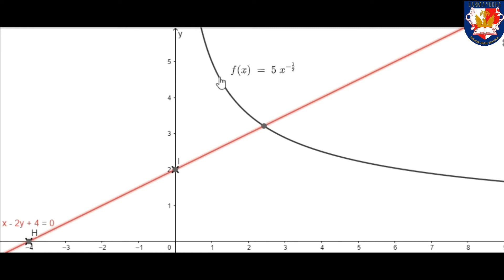From the curve y equals 5x to the power of negative 1 over 2 and this line, we only have one intersection point.